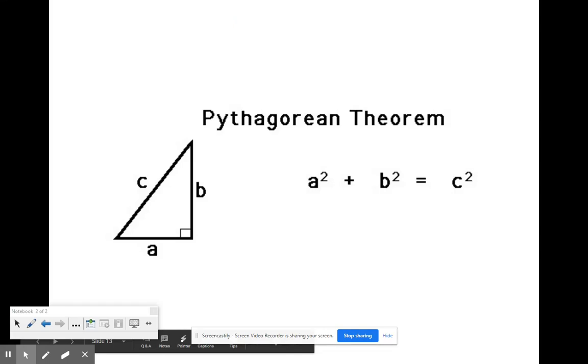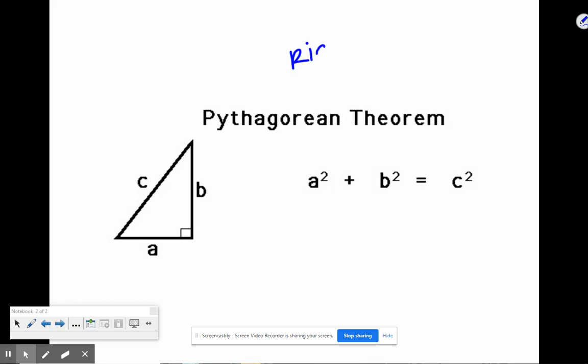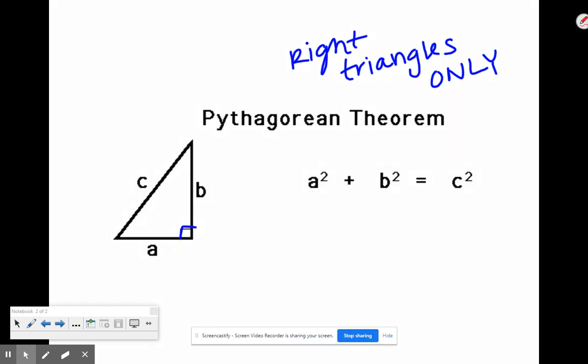Okay, today we are going to talk about the Pythagorean Theorem. Please make sure you have this written down in your notes, so get out a sheet of paper and start writing. The most important thing that you need to know about the Pythagorean Theorem is that you can only use it with right triangles, so maybe add that to your notes as well. Right triangles only. If it's not a right triangle, then we cannot use the equation A squared plus B squared equals C squared.